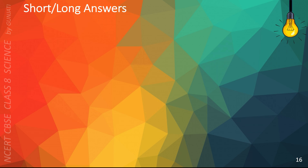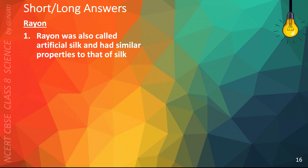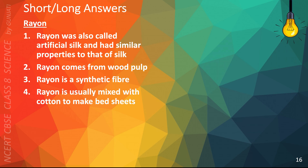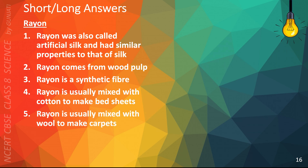The following points will help you answer questions on Rayon. Rayon was also called artificial silk and had similar properties to that of silk. Rayon comes from wood pulp. Rayon is a synthetic fiber. Rayon is usually mixed with cotton to make bedsheets. Rayon is usually mixed with wool to make carpets.